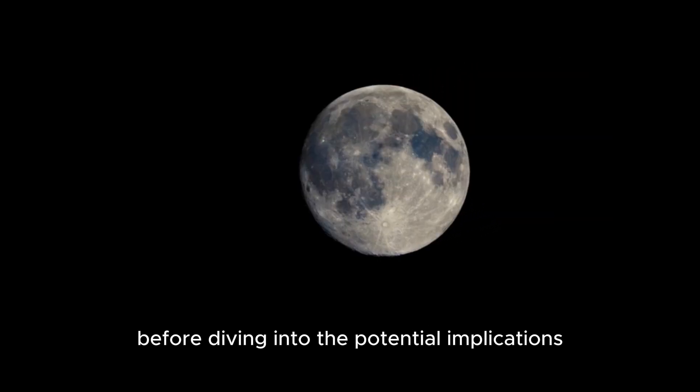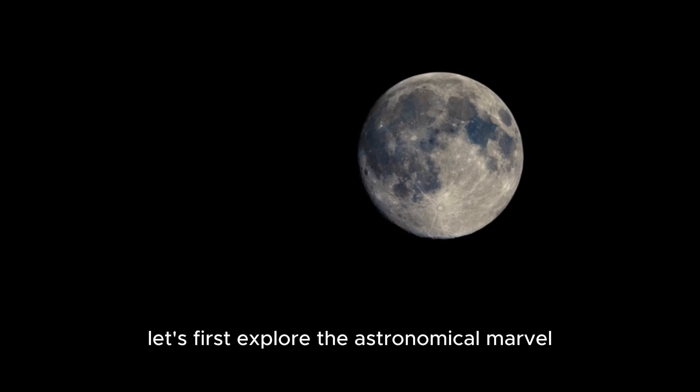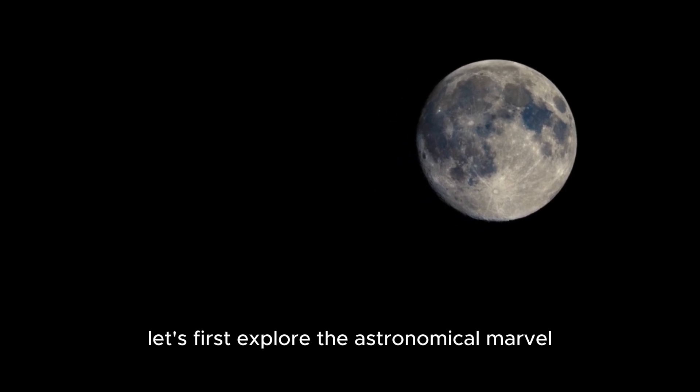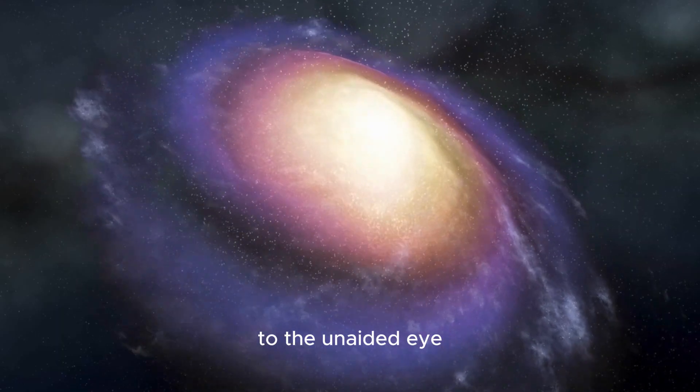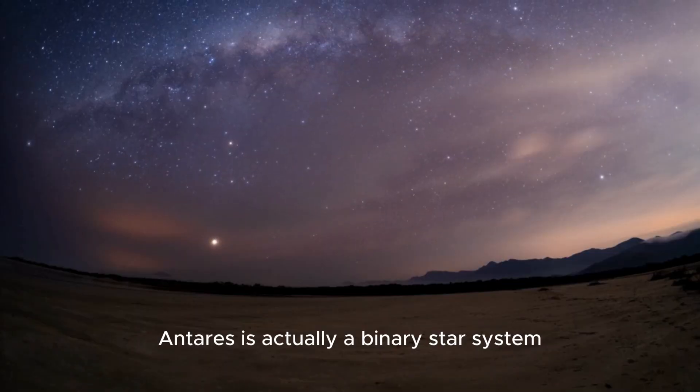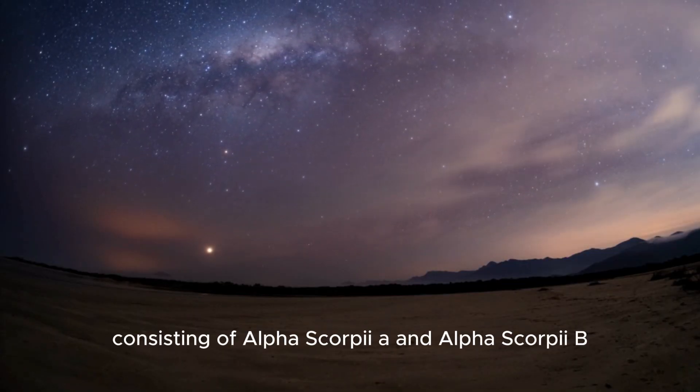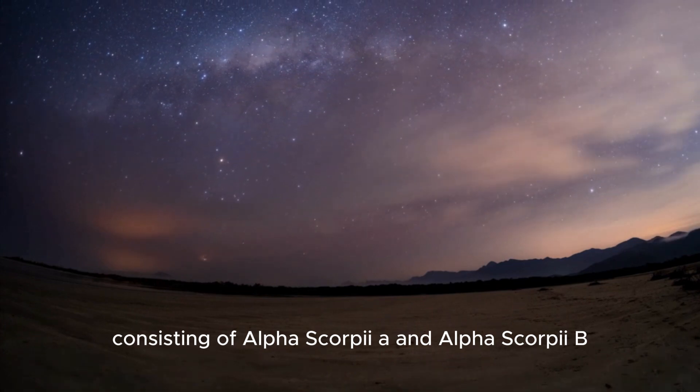Before diving into the potential implications, let's first explore the astronomical marvel that is Antares. While it may appear as a singular entity to the unaided eye, Antares is actually a binary star system, consisting of Alpha Scorpii A and Alpha Scorpii B.